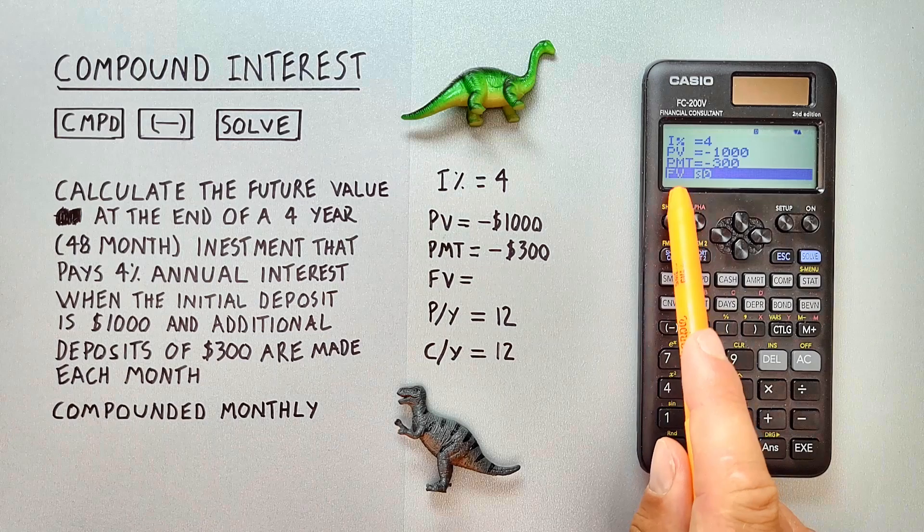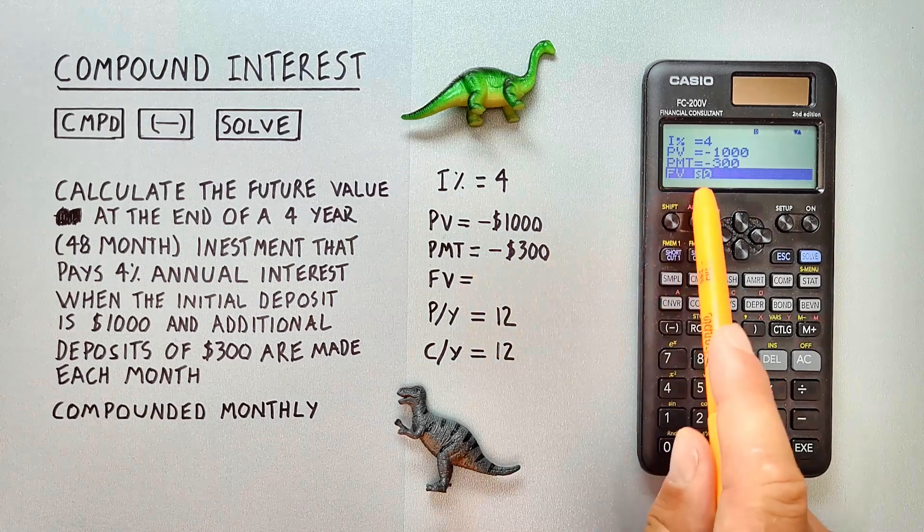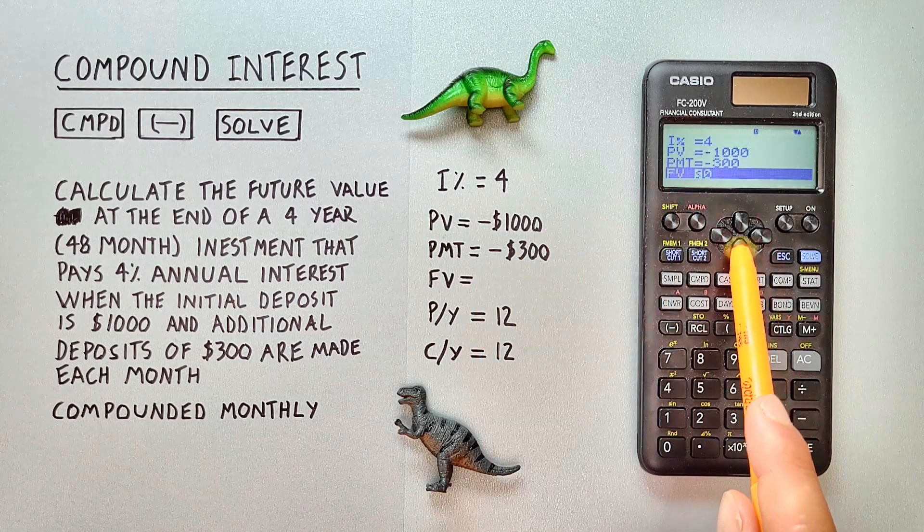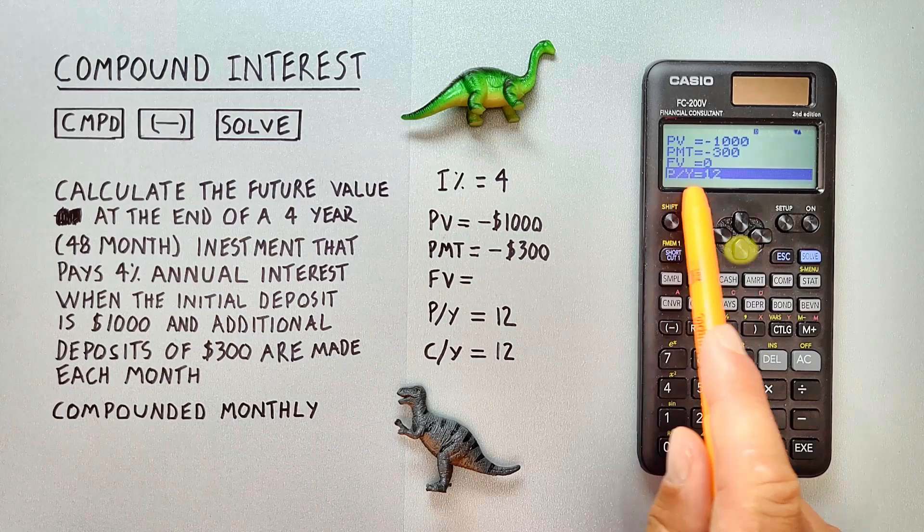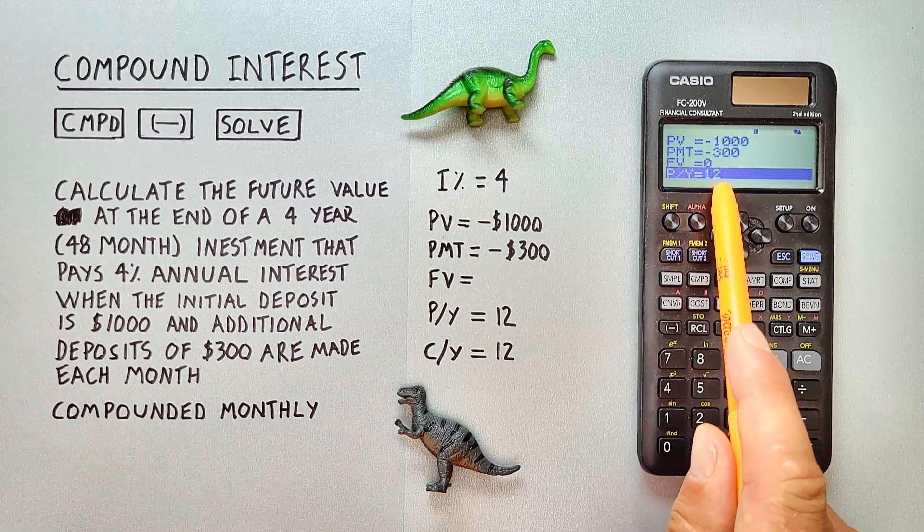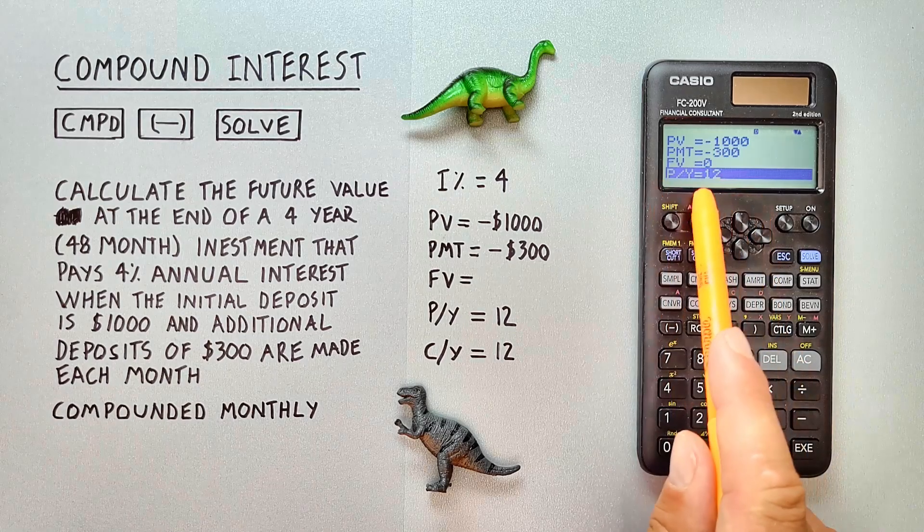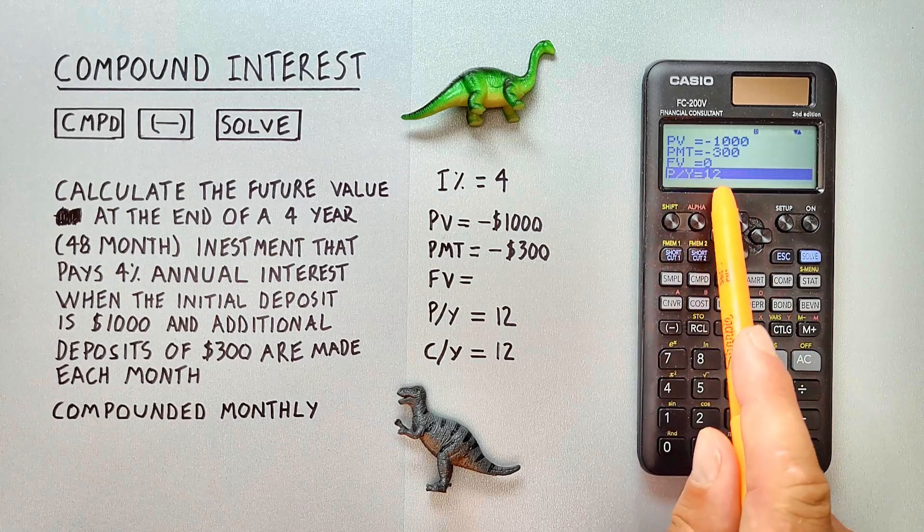Our future value. That's our unknown. That's what we're trying to solve. So we can scroll past that to our PY, which is 12. Mine's already set. If it's not, go ahead and type that in.